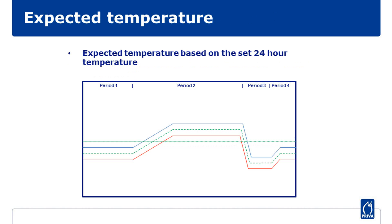The next step is the calculation of a desired temperature in each period based on the 24-hour temperature setpoint. The green line follows the strategy — in this case, exactly between the heating and ventilation temperature. If the temperature would exactly follow the desired temperature, the setpoint is realised.